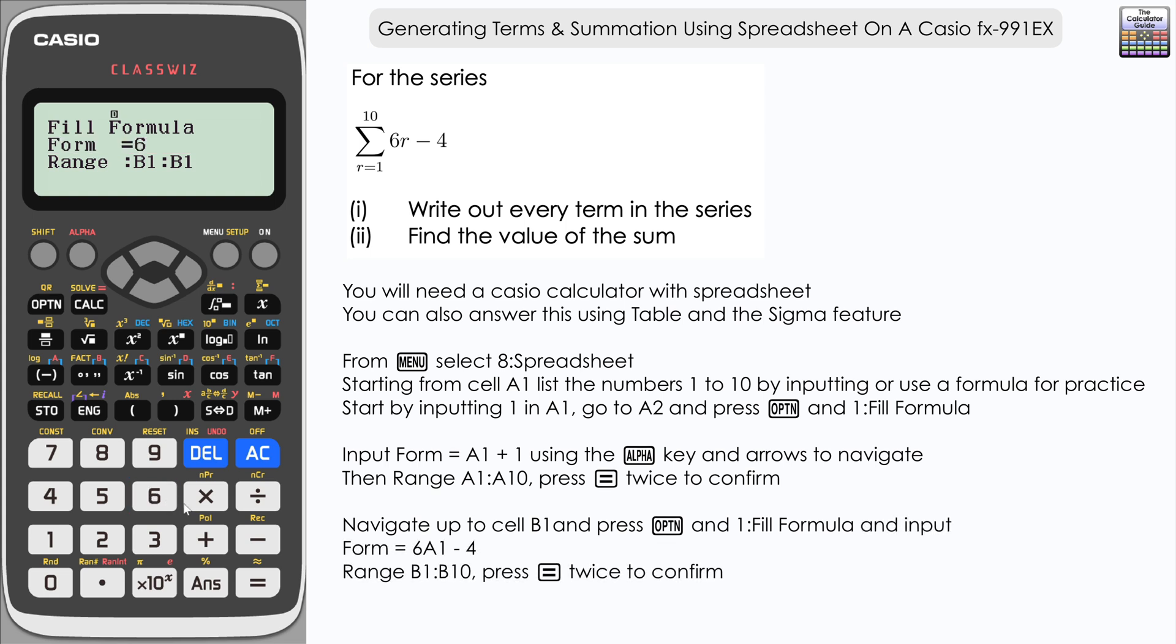We're going to write 6 but instead of r what we're going to do is reference the very first cell that we had on there, A1, so term 1, A1, and this will obviously change as it goes down. For row 2 it will reference A2, row 3 it will reference A3 and so on. So it's A1 minus 4.